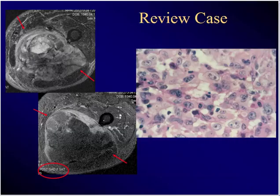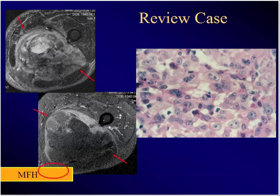65-year-old with a big mass in the thigh, which is very painful, and the person is having some pulmonary symptoms and maybe even some mild fever associated with this. Big soft tissue mass — what's the diagnosis? It's an old person, so what are you going to guess? MFH.